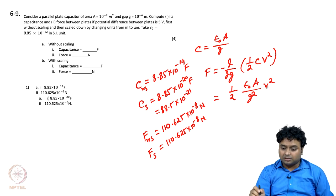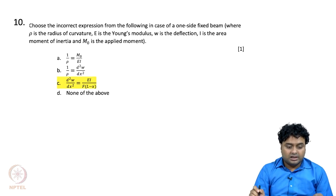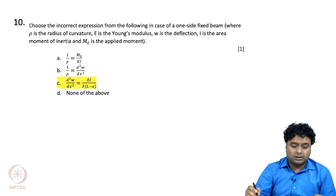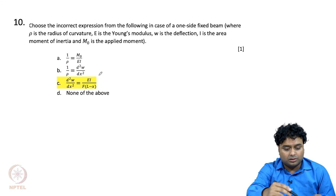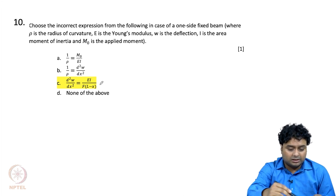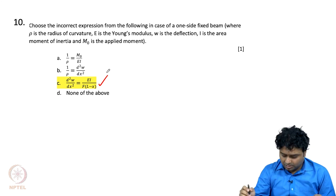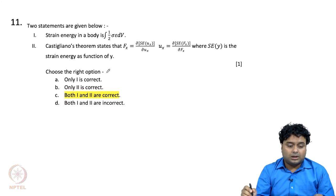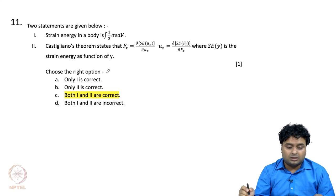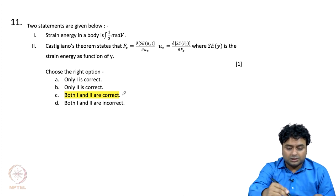For questions 6 to 9, choosing the incorrect option: expressions like 1 over rho equals M over EI and 1 over rho equals d squared w over dx squared are correct, but option C is not correct. For the next question, the strain energy of a body is the integral of half sigma epsilon, and Castigliano's theorem — both statements are correct, so the answer is C.